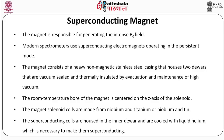The magnet is responsible for generating the intense B0 field. Modern spectrometers use superconducting electromagnets operating in the persistent mode. The magnet consists of a heavy non-magnetic stainless steel casing that houses two divars that are vacuum sealed and thermally insulated by evacuation and maintenance of high vacuum. The room temperature bore of the magnet is centered on the Z axis of the solenoid coils. The magnet solenoid coils are made from niobium and titanium or niobium and tin. The superconducting coils are housed in the inner divar and are cooled with liquid helium, which is necessary to make them superconducting.